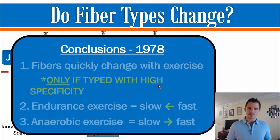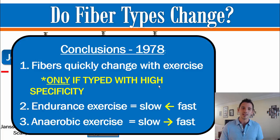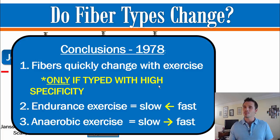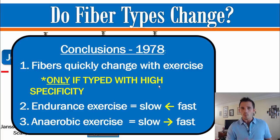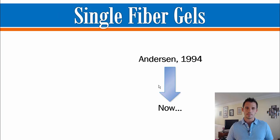So our conclusions from 1978 are different than those from 1976. Fibers actually do change with exercise training, but only if typed with high specificity. When we allow ourselves to identify these hybrid or in-between fibers, we start to see change — but when we use methods that only allow us to classify as type 1 and type 2, we don't notice a change. More specific, more accurate fiber typing methods are giving us the ability to pick up on fiber type changes with exercise. Endurance training looks like it causes a fast-to-slow twitch transition, and anaerobic training causes the opposite — slow to fast.